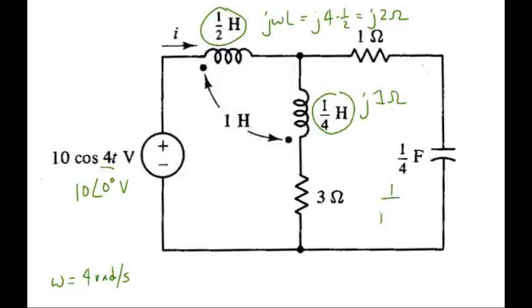Here we have 1 over j omega C, so we have 1 over j times 4 times 1 quarter, so that's minus j ohms for the capacitor. Mutual inductance is j omega L, so that's j 4 ohms.